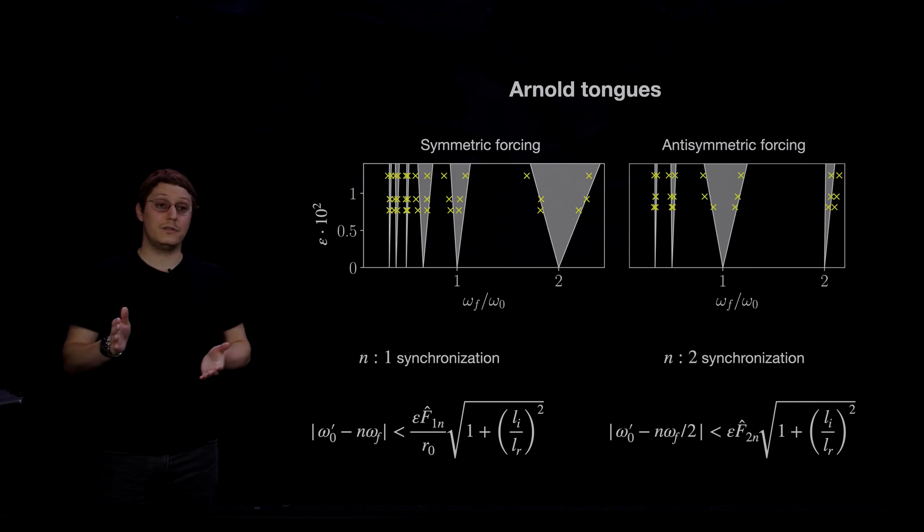The Arnold tongues are the regions in the space of forcing frequency and forcing amplitude where the system synchronizes to the input. So the gray regions are delimited by our analytic bounds. And the yellow crosses are from our experimental measurements. And we see remarkable agreement between approximations made on an ODE model and measurements from a turbulent flow field.